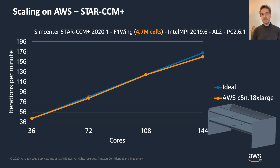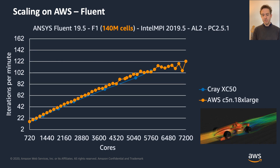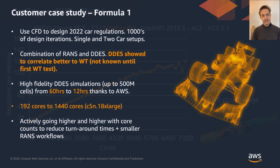For Star-CCM+, a simplified Formula One rear wing at 5 million cells scales linearly to 144 cores — and since the cost is the same at linear scaling, running at 144 cores is simply faster for the same price. The key test case for today is 400 million cells with two Formula One cars following each other, which maintains linear scaling to about 4,500 cores — just under 100,000 cells per core — and remains reasonably efficient up to 7,000 cores. For Fluent, benchmarks comparing against a Cray XC50 show equal or better scaling up to nearly 7,000 cores.